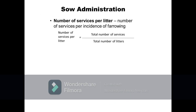Next parameter is the number of services per litter, which refers to the calculated average number of inseminations, either artificial or natural, per incidence of farrowing. It is calculated as total number of services divided by the total number of litters. For example, 18 services which resulted in 12 litters or farrowings give an average of 1.5 services per litter.